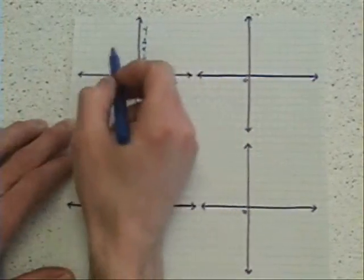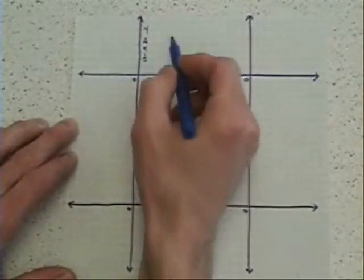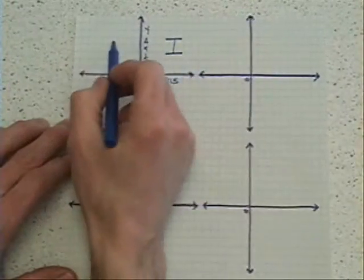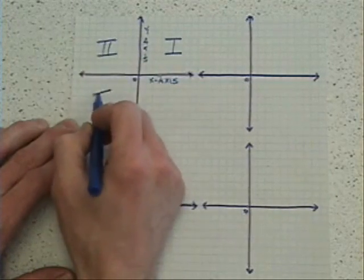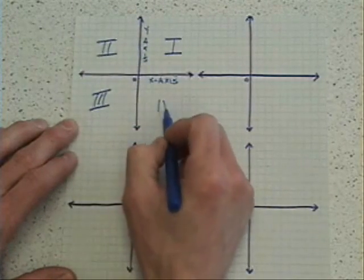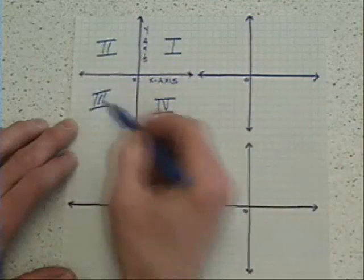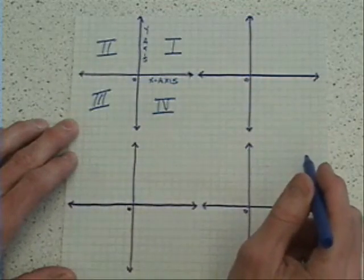Now, there are four regions, or we'll call them quadrants. This is quadrant one. Usually, a Roman numeral is used. This is quadrant two, quadrant three, and quadrant four. And each of the quadrants have different characteristics, which we'll talk about in class.